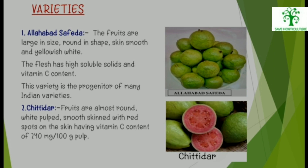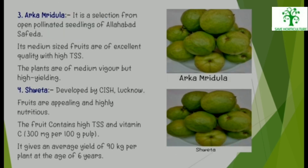2. Chittidar: Fruits are round, white-fleshed, smooth-skinned with red spots on the skin, having Vitamin C content of 240 mg per 100 g of pulp. 3. Arka Mridula: It is a selection from open-pollinated seedlings of Allahabad Safeda. Its medium-sized fruits are of excellent quality with high TSS. The plants are of medium vigour but high yielding.